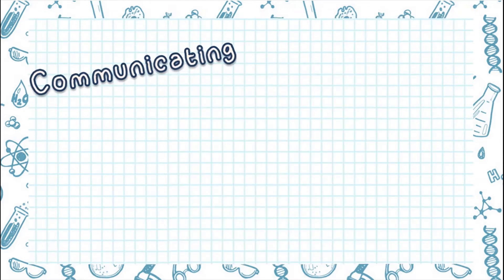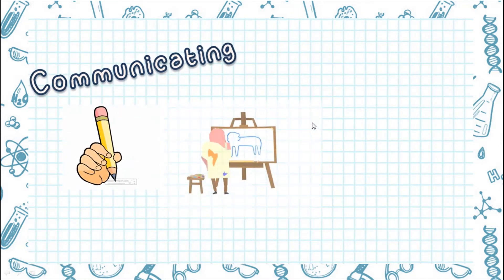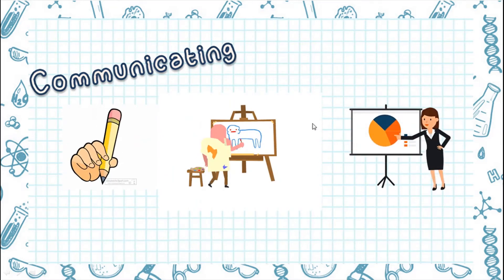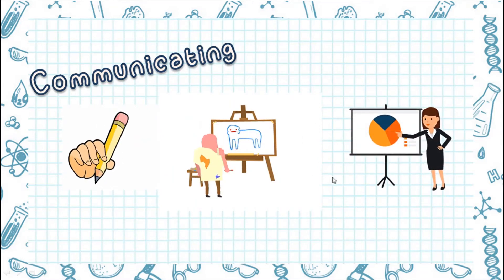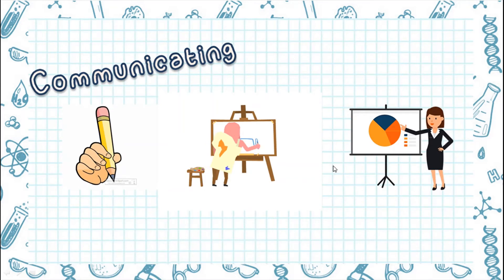Next, let's go to communicating. Communicating means to write down, draw, or tell your ideas to other people. Scientists always use this to communicate to other scientists.